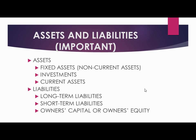Fixed assets are classified into two parts: tangible and intangible. Tangible assets are those you can touch, while intangible assets are those you cannot touch — like copyrights, trademarks, and brands. An exam question might ask: which of the following is a non-current intangible asset? The answer would be copyright, trademark, or brand.